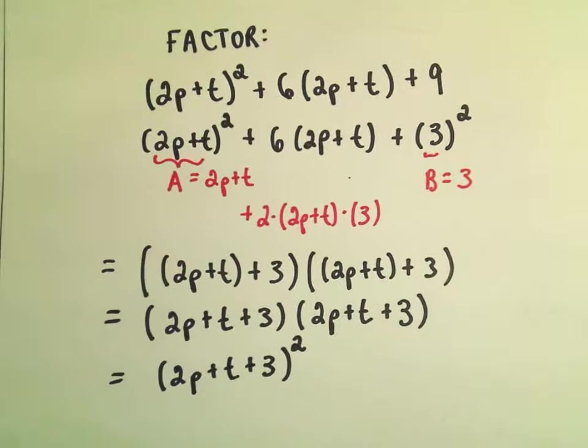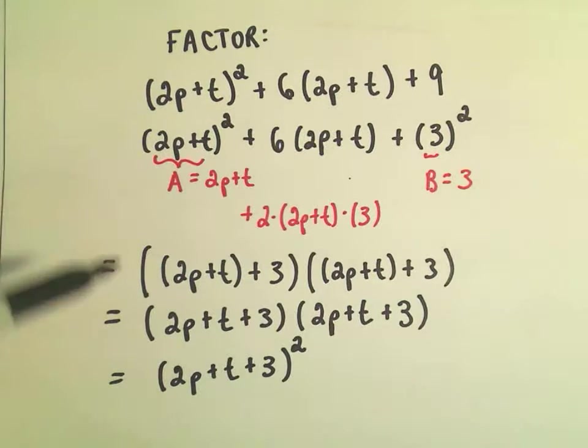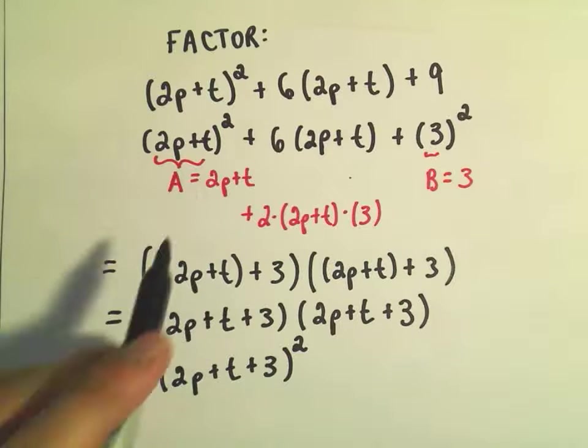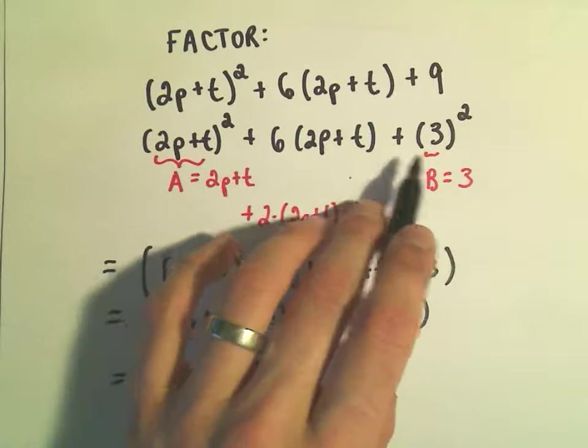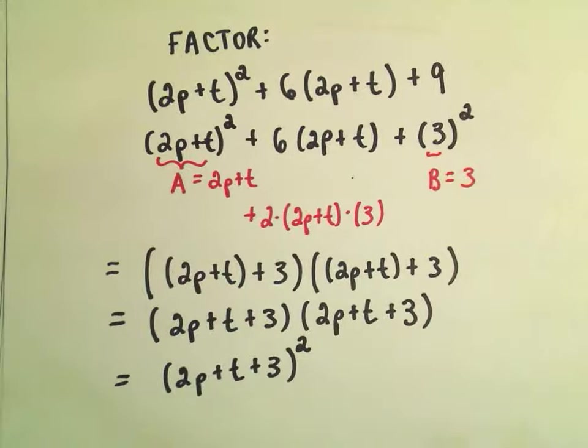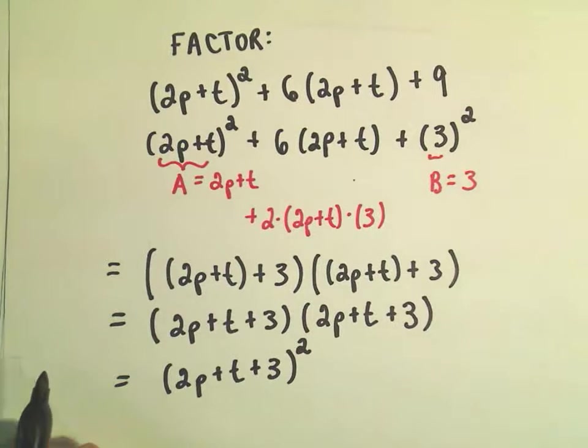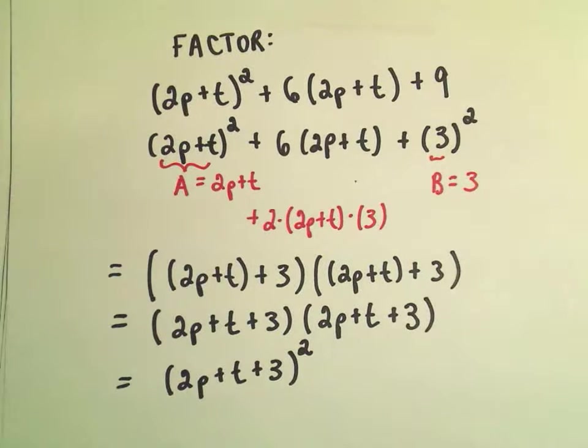So again, it looks a little tricky at the beginning, but just trying to really emphasize this form, this a squared plus 2ab plus b squared. That's a perfect square trinomial, and it actually turns out it factors a little bit more nicely than I think you might first believe.